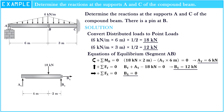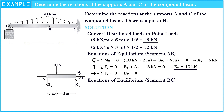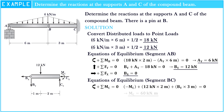Now we have the support values for the first segment. Next, we will find all the support values of the compound beam. Let's apply the moment equation of equilibrium about B and C respectively. The sum of moments at point C is equal to zero. So: negative moment at C plus 12 kN multiplied by 2 meters plus By multiplied by 3 meters is equal to zero.